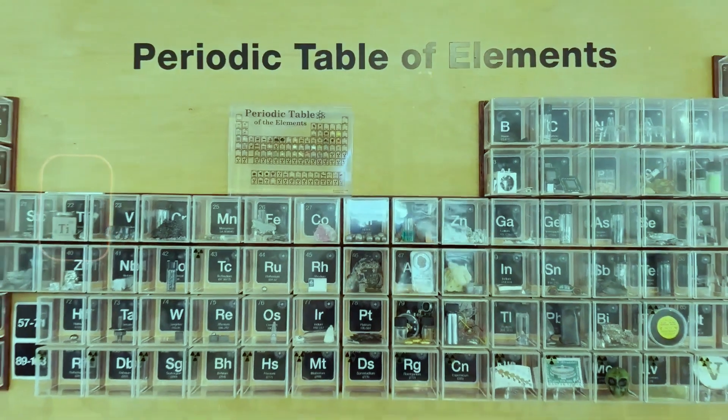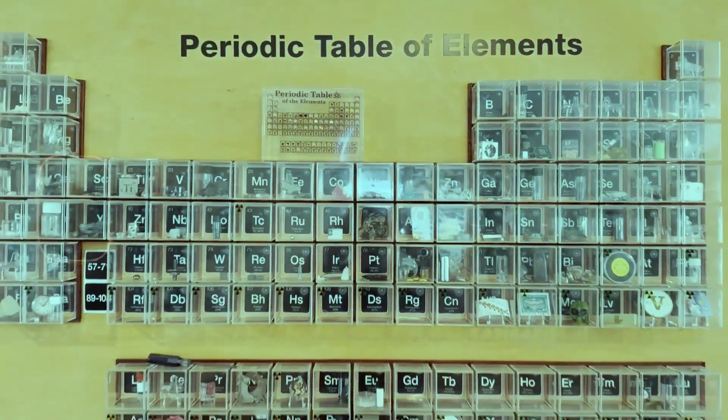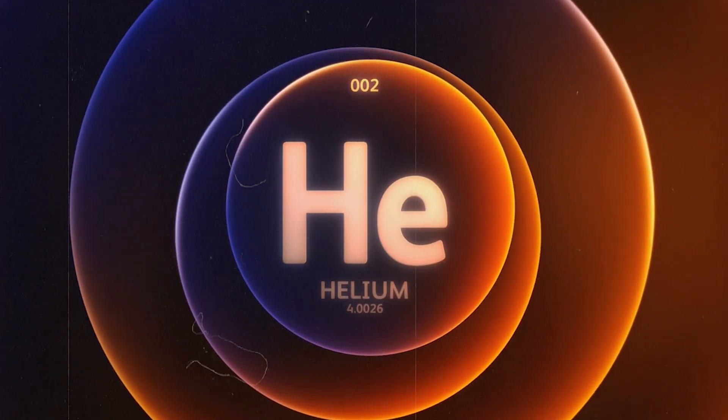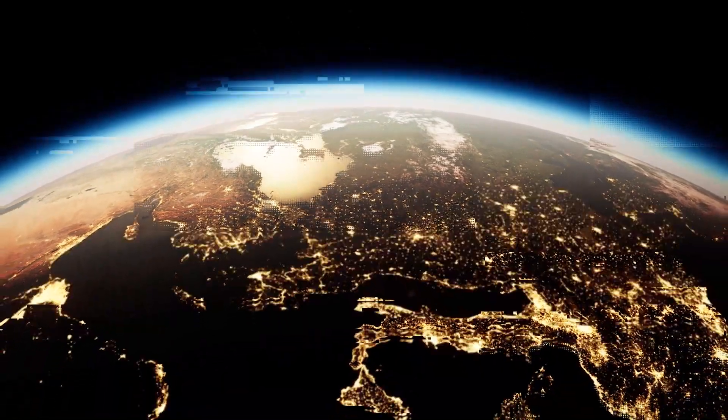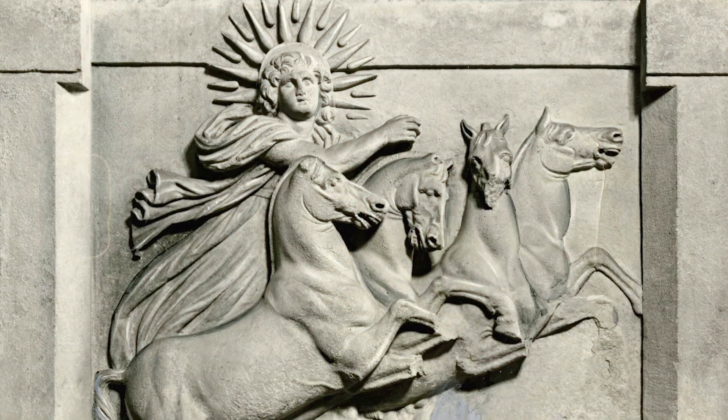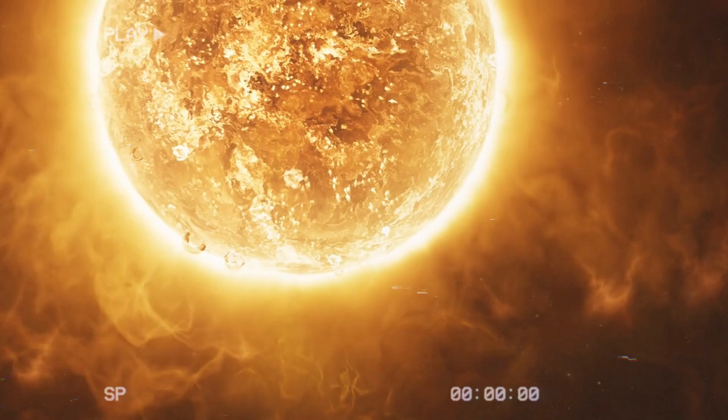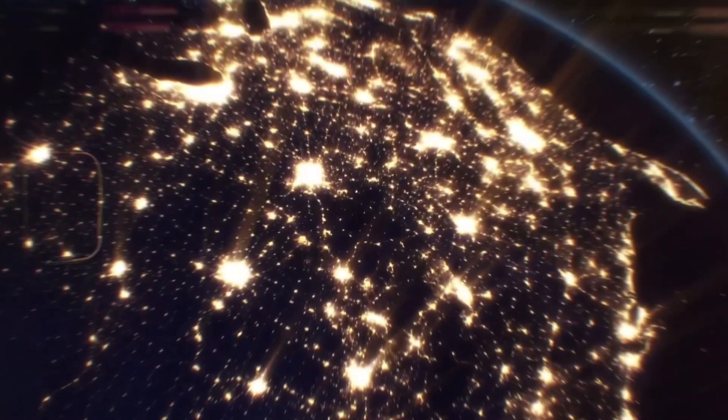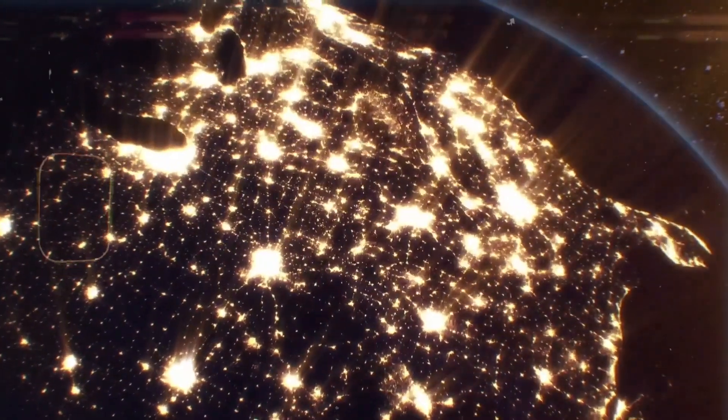Each noble gas has its own story within the periodic table. Helium, the lightest of them, was first discovered not on Earth, but in the Sun. Its name comes from Helios, the Greek word for the Sun, because it was detected in solar spectra before being found on Earth.